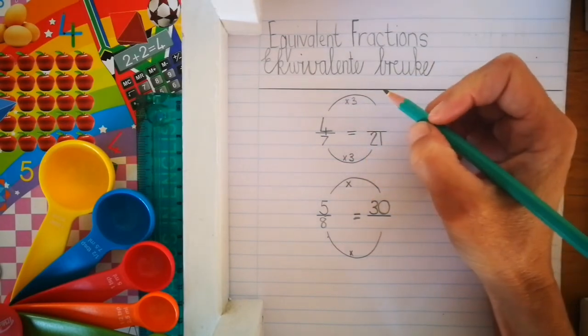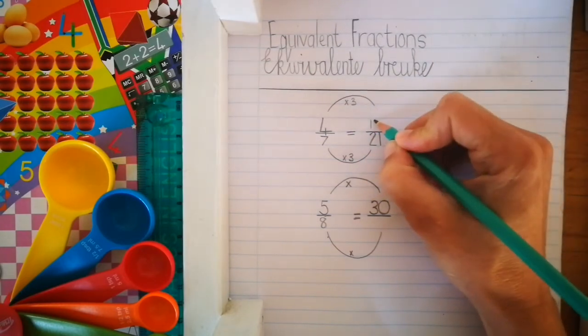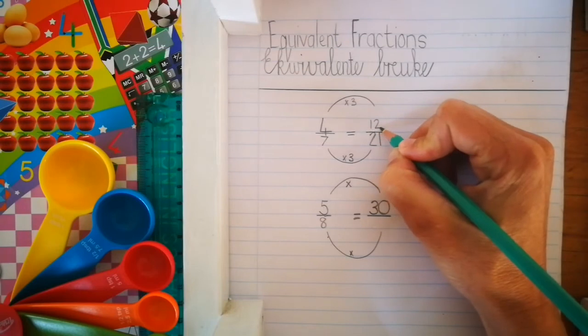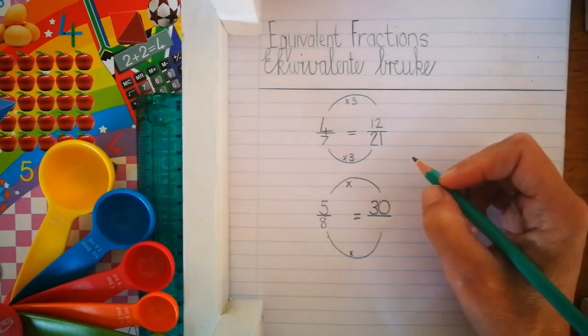4 times 3: 4, 8, 12 — is 12. And there is our answer for the equivalent fraction.